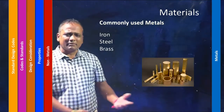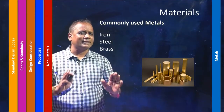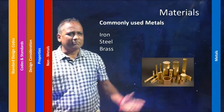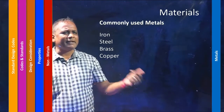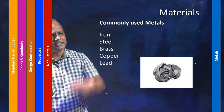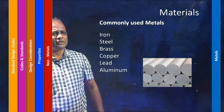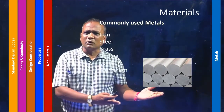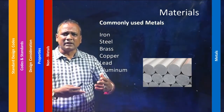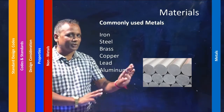Some commonly used metals are brass, copper, lead, and aluminum. I won't categorize these as ferrous and non-ferrous here — these are just commonly used metals. Aluminum has been abundantly used because of its very good technological properties.